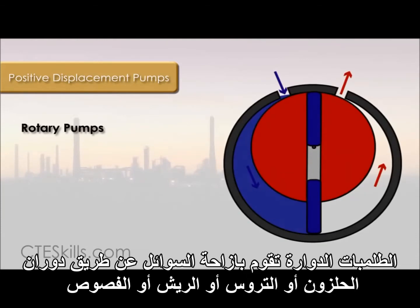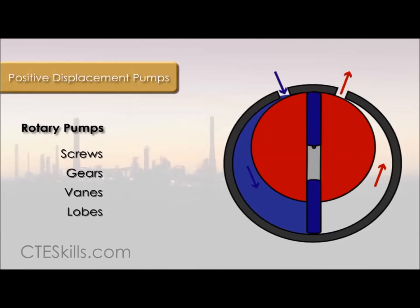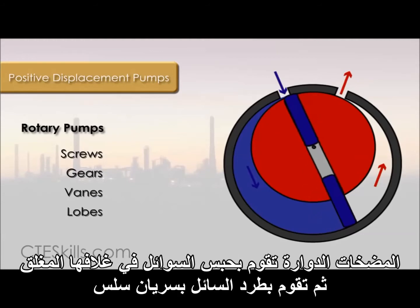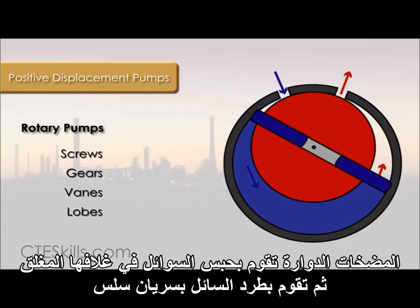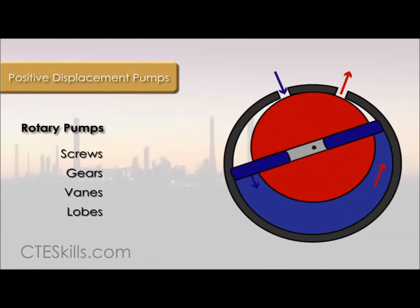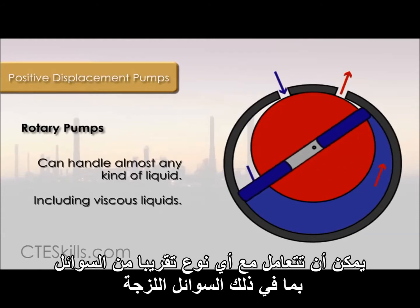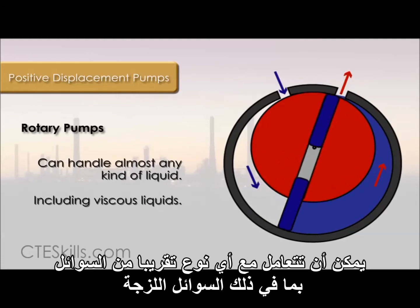Rotary pumps displace fluids by means of rotating screws, gears, veins, or lobes. A rotary pump traps fluid in its closed casing and discharges a smooth flow. They can handle almost any kind of liquid that does not contain hard and abrasive solids, including viscous liquids.